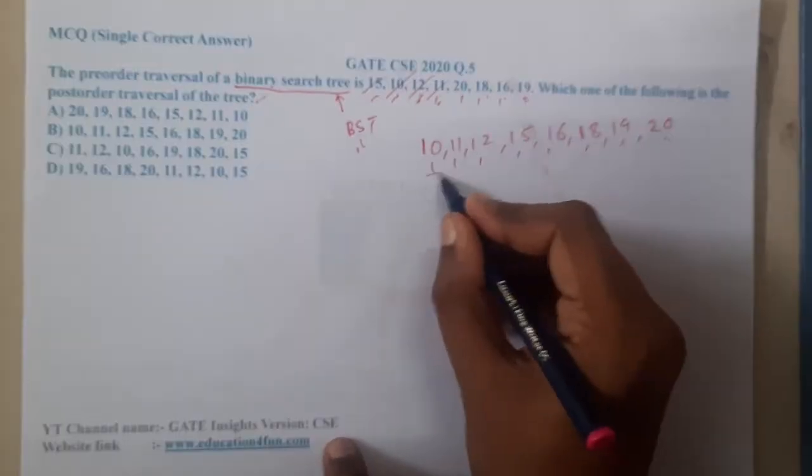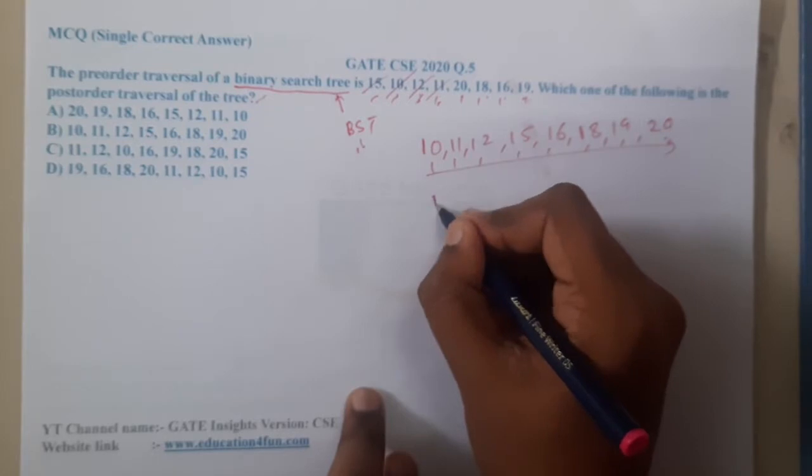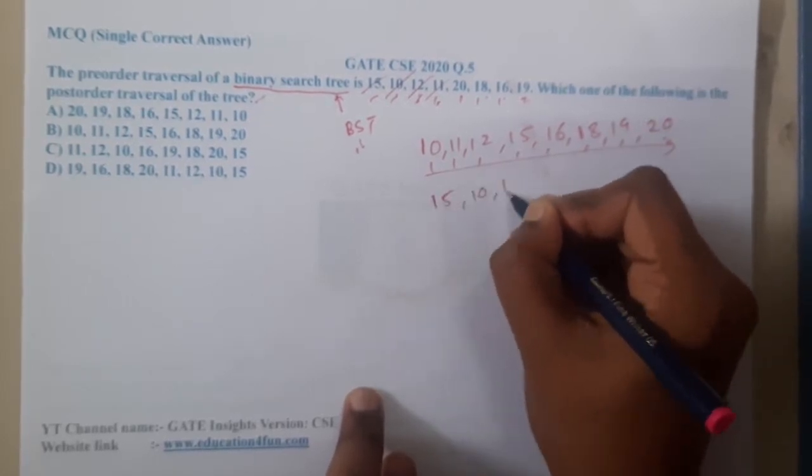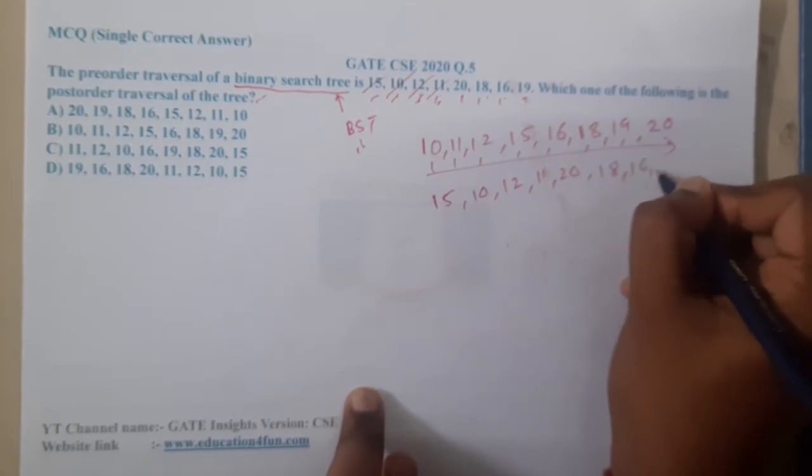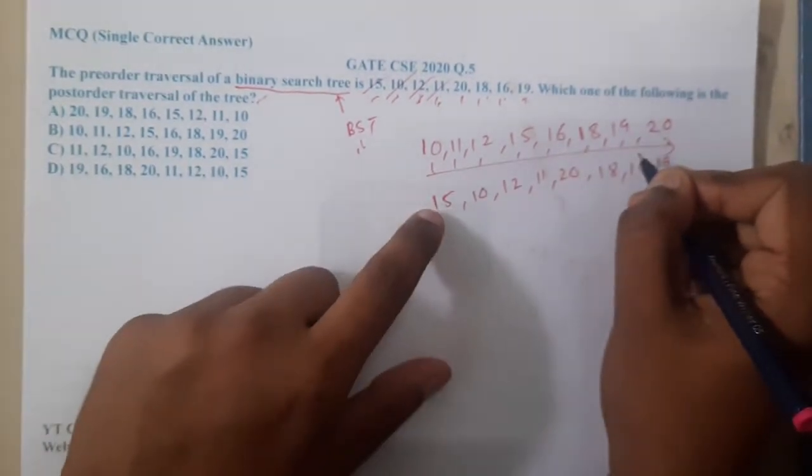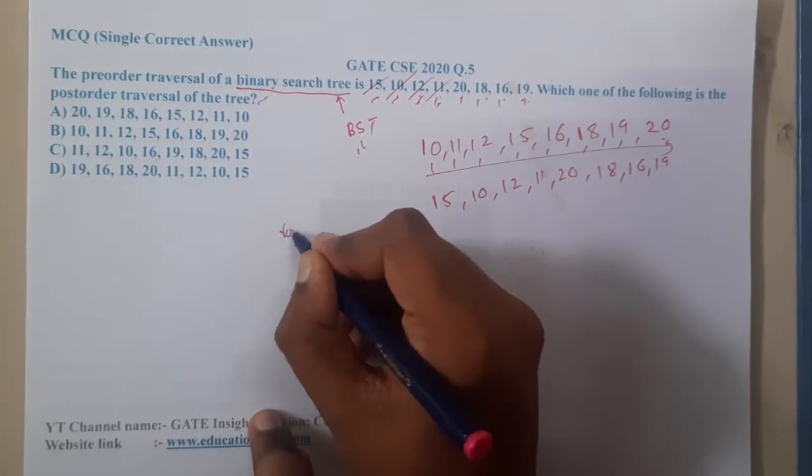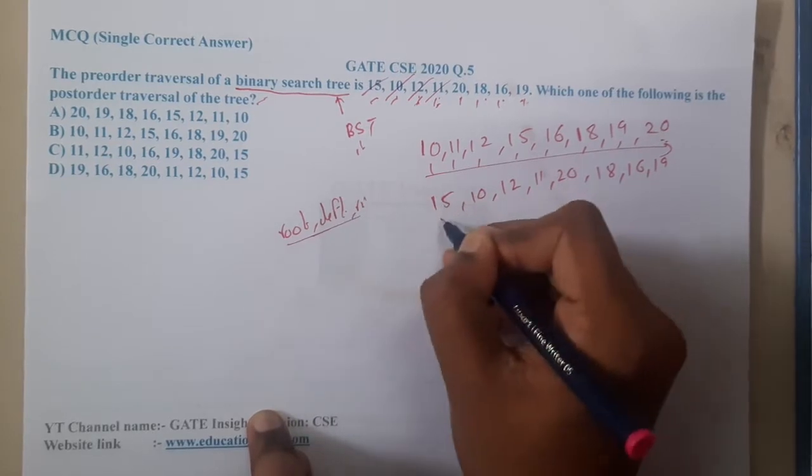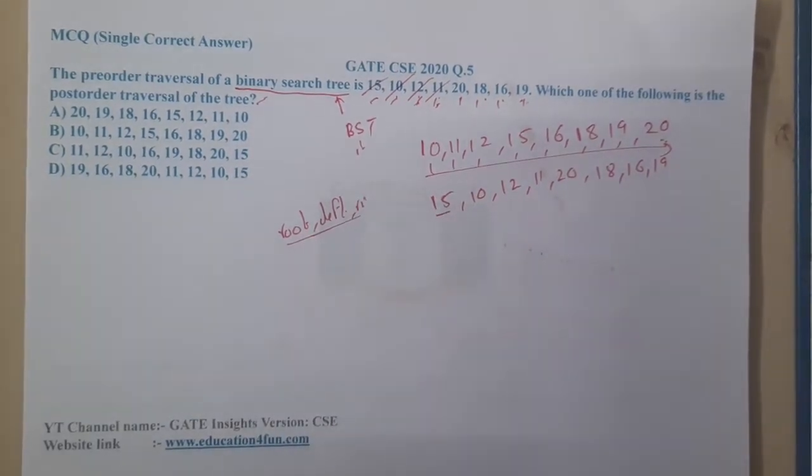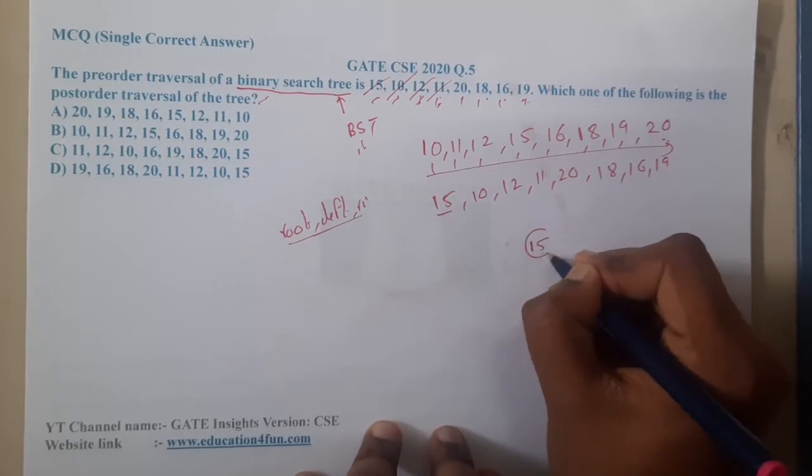The preorder sequence is 15, 10, 12, 11, 20, 18, 16, 19. If you recall, in preorder where can you find the root? Preorder is root, left, right. So 15 is our root. Let us start. 15 is done, so you will be moving from left to right.